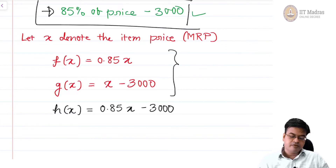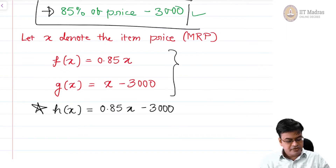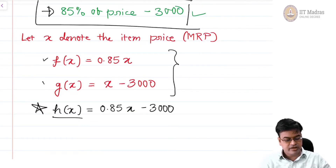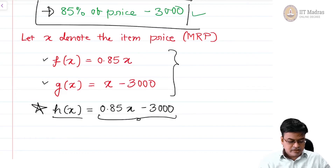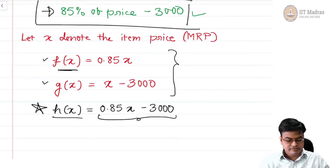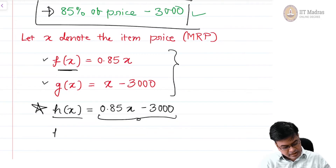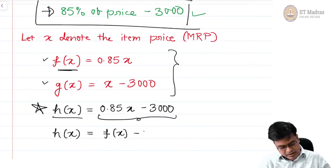The offer that you got, if I want to write this mathematically, I can write it as some function h(x) = 0.85x − 3000. Now when dealing with functions in mathematics, it is good to see if there is some correspondence of the function h with these functions f and g. This is the question we are trying to answer when studying composite functions. If I use f, then f(x) = 0.85x, so I can write h(x) = f(x) − 3000.